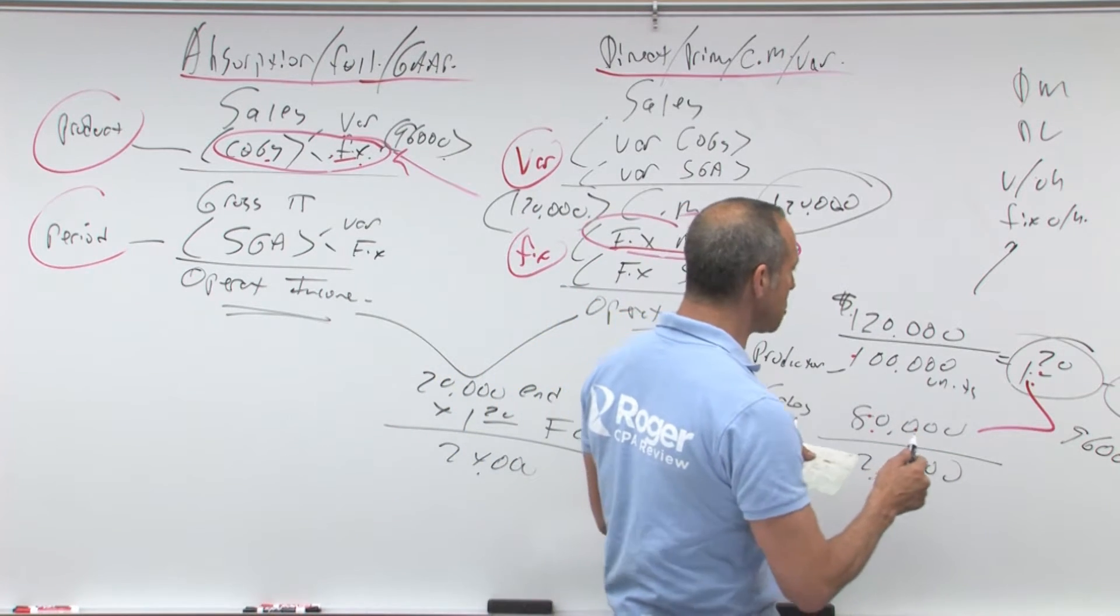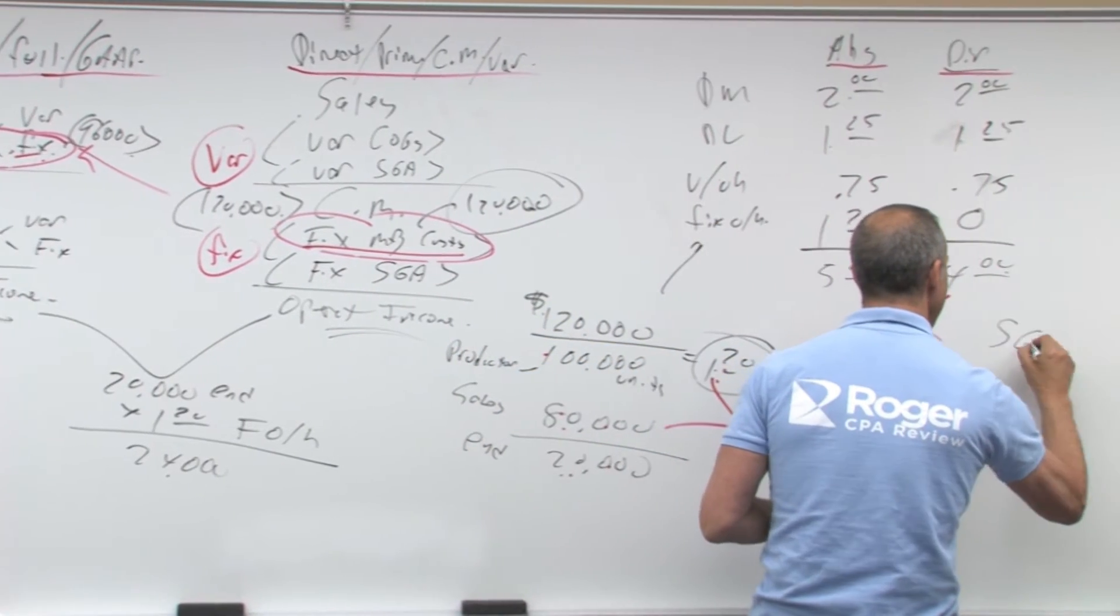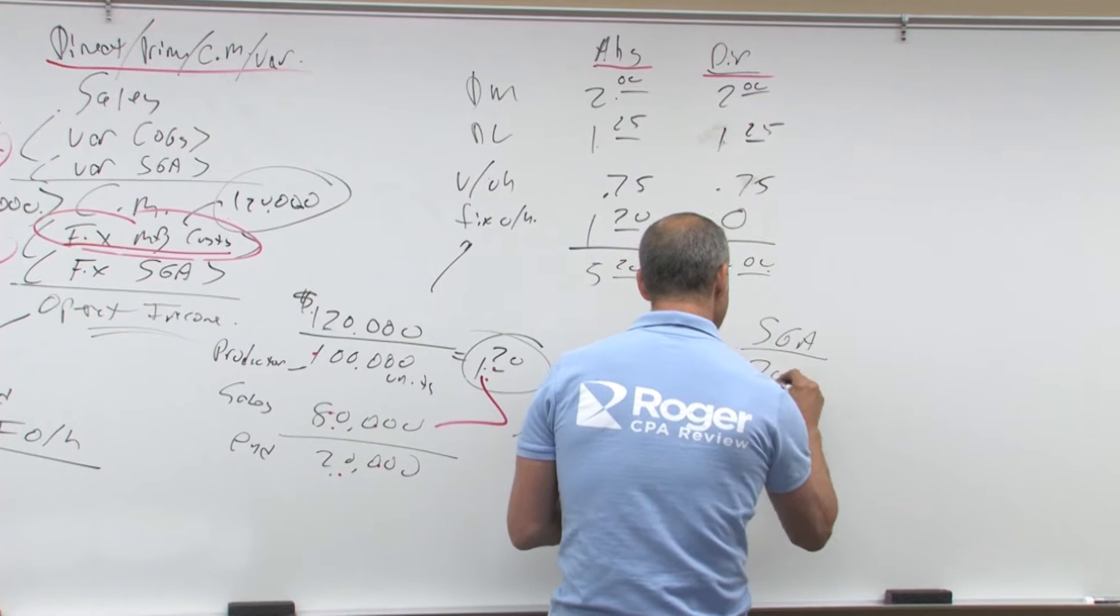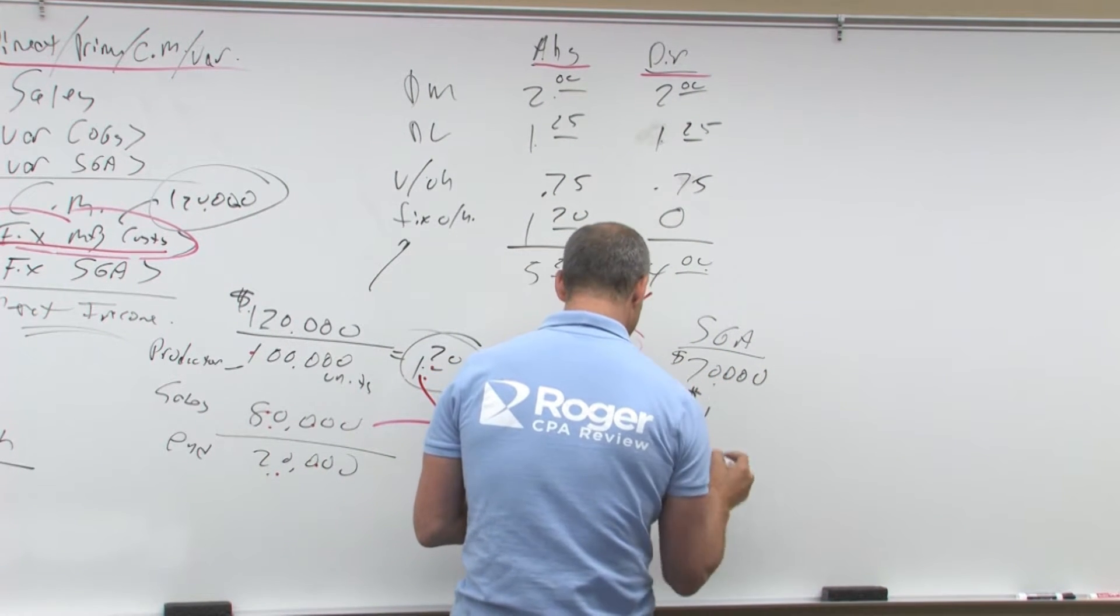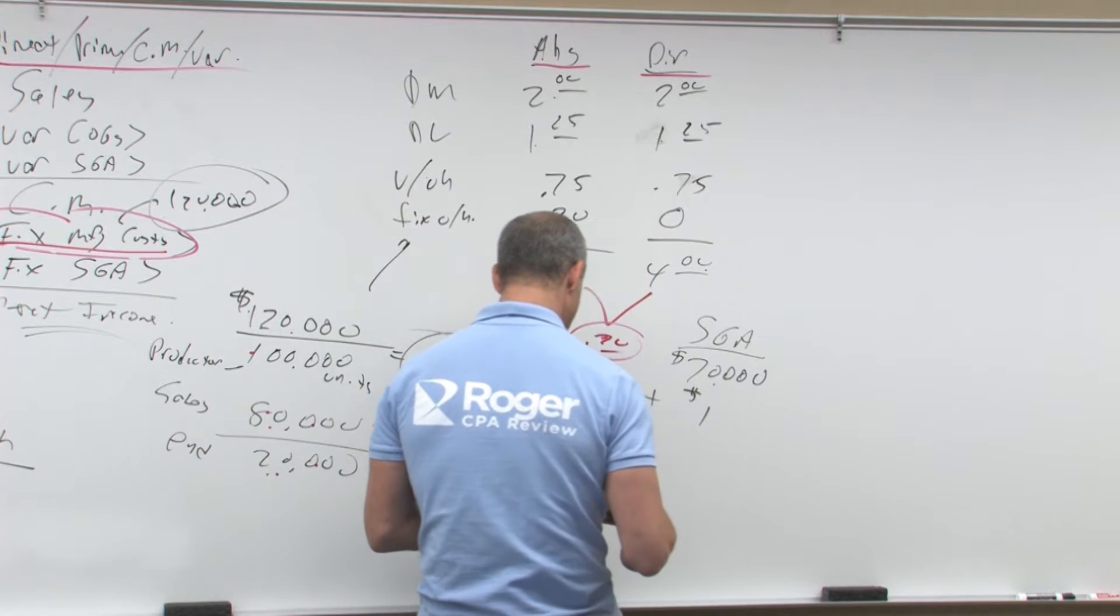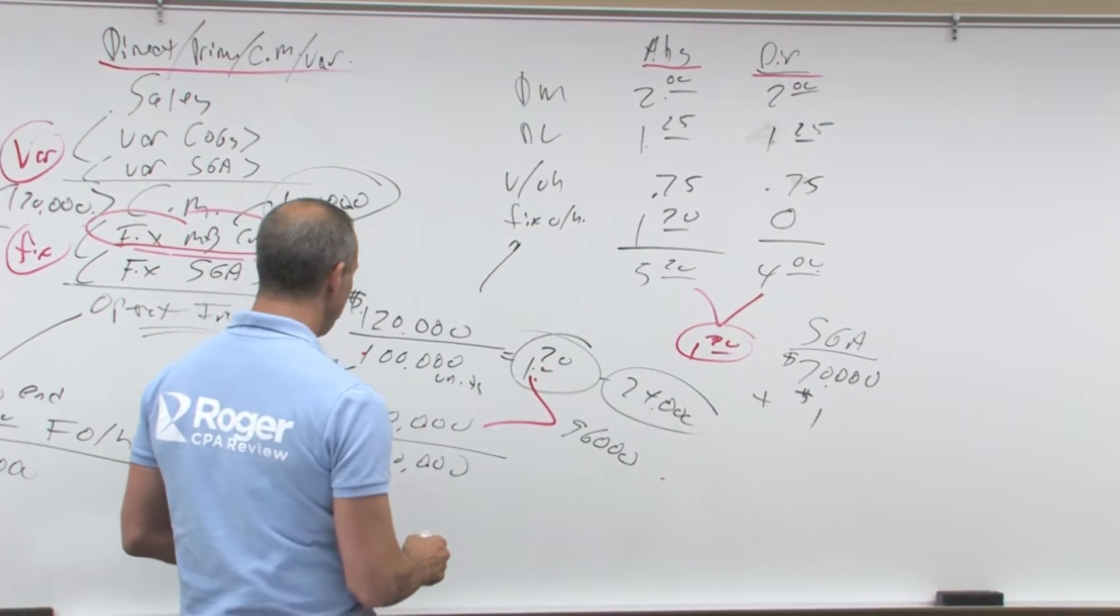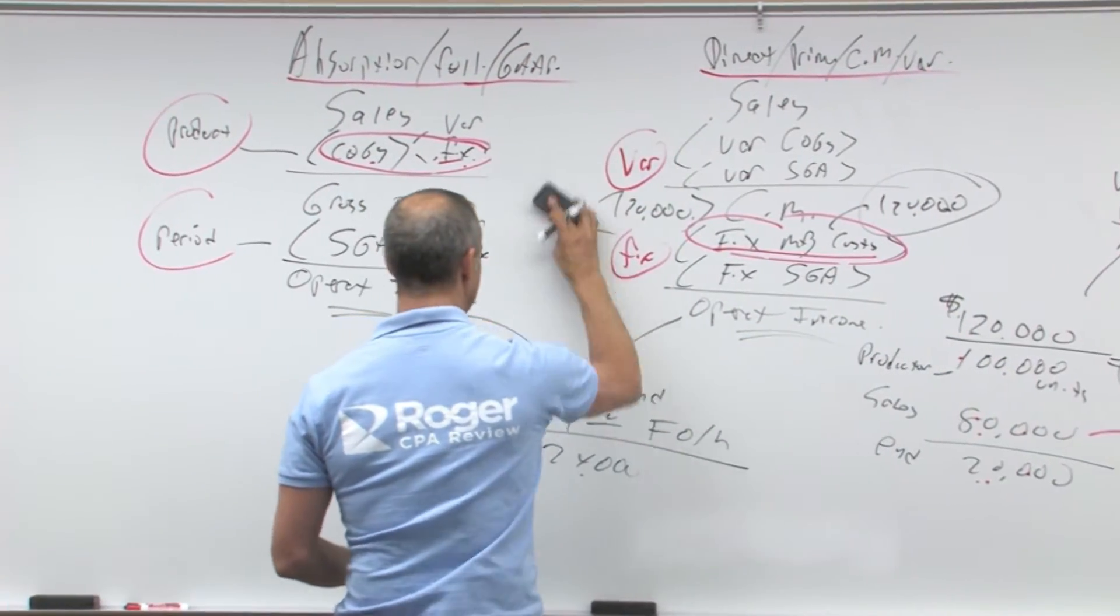Let's pretend my SG&A, now remember, SG&A is treated the same under each because you expense that, but let's say SG&A was $70,000 fixed and a dollar variable. All right, so let's come up and we'll do our income statements for both and see what the difference is.